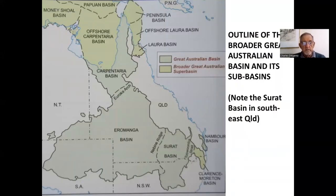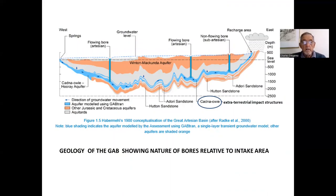Looking again at the Eromanga Basin, its division into the Surat Basin in the south-east and the Carpentaria Basin in the north — where the offshore basin is shown in a lighter green — is all regarded as the broader Great Australian Super Basin. A further section of the Eromanga Basin shows the main aquifer units: the Cadnawi and Hutton sandstones, and aquifers also in the topmost Winton unit. The first marine incursion occurs where that blue of the Cadnawi Formation is.